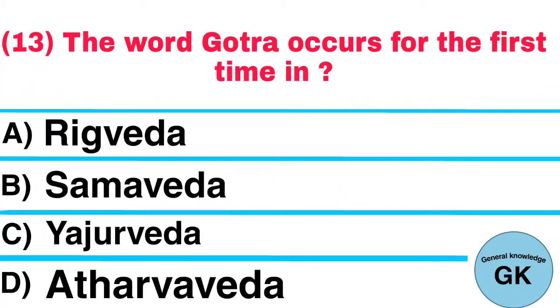Question number 13. The word Gotra occurs for the first time in: A. Rigveda, B. Samaveda, C. Yajurveda, D. Atharvaveda. Answer: Rigveda.